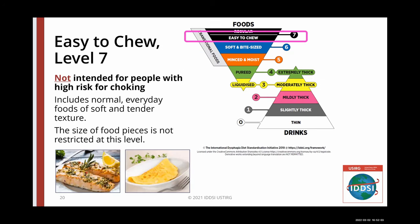Easy to chew, level seven, includes normal everyday foods of soft and tender textures that can easily be cut or separated with the pressure from the sides of a fork. The size of food pieces is not restricted at this level. Therefore, this level is not intended to prevent choking. Foods that are tough, hard, chewy, fibrous, stringy, or have seeds, bones, or gristle are considered non-compliant at this level.